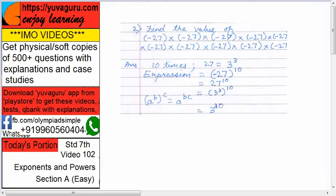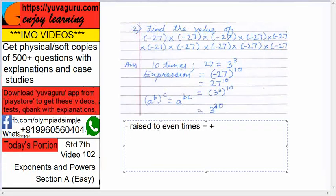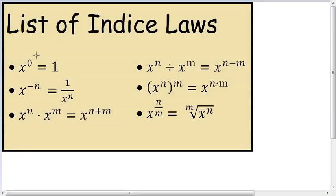Minus raised to even times equals plus. So first remove this minus. Minus raised to 10, it will become plus. So it becomes 27 raised to 10. But what is 27? 3 cube. 3 cube raised to 10. So what is this formula for indices? Now see here, these are the 6 laws of indices which are very important to you.